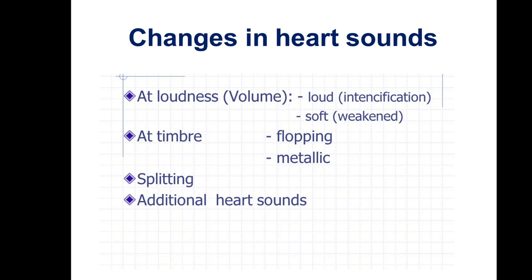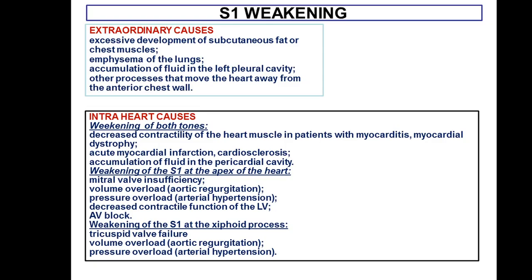Changes in heart sounds include loudness changes (loud or soft), timbre changes (tender, flopping, metallic), splitting, and additional heart sounds. S1 weakening may be caused by extracardiac or intracardiac causes. Extracardiac causes include excessive development of subcutaneous fat or chest muscles, emphysema of the lungs, accumulation of fluid in the left pleural cavity, or other processes that move the heart away from the interior chest wall. Weakening of both S1 and S2 may be caused by decreasing contractility of the heart muscle, as in myocarditis, myocardial dystrophy, cardiomyopathies, acute myocardial infarction, or accumulation of fluid in the pericardial cavity.